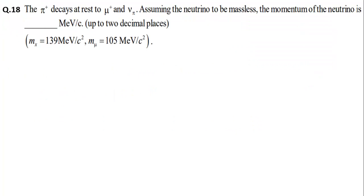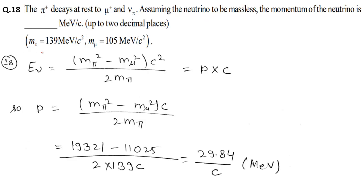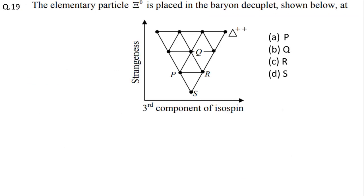Question 18: π+ decays at rest to μ+ and ν_π. Assuming the neutrino to be massless, the momentum of the neutrino is — the masses M_π and M_μ are given. We know energy E = pc, so if we calculate the energy of the neutrino we can find its momentum p = E/c. The answer follows straightforwardly from energy-momentum conservation. This is an easy question.